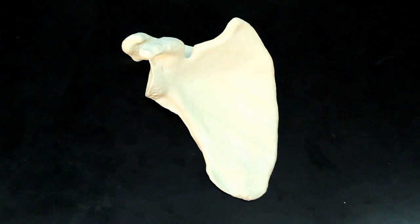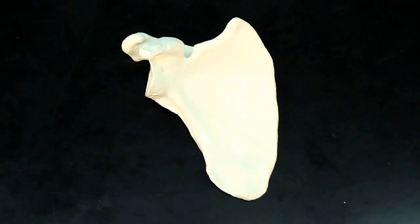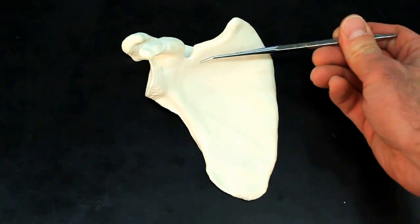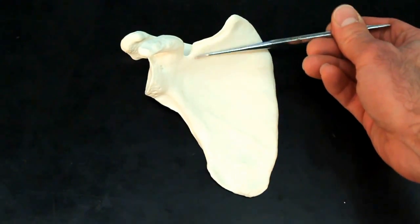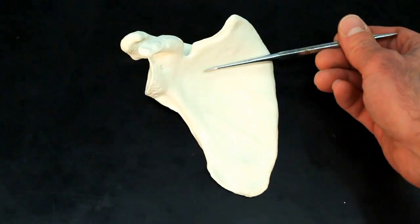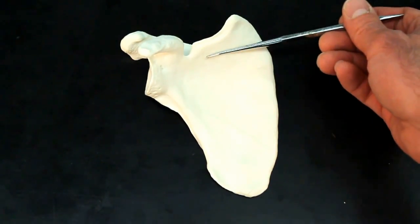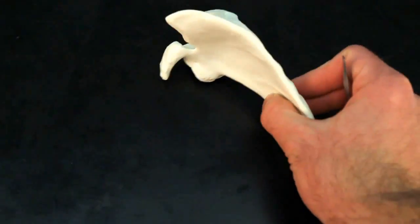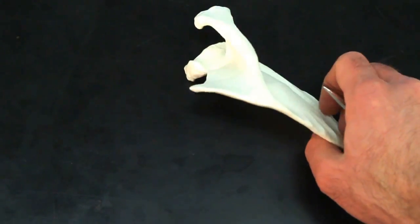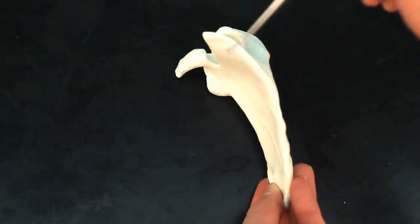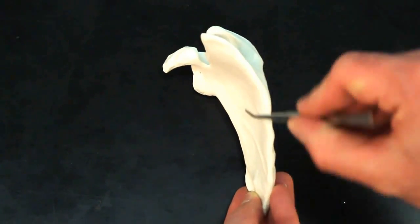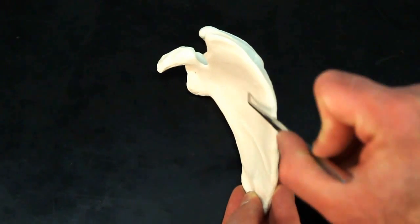Now, if we think about the term subscapular fossa, well, sub means below, scapula, we're in the scapula, fossa, indent. This shallow indent, right here, is the subscapular fossa. If you kind of pick it up, you can see how the bone's actually curled. That little bit of an indent, right here, this is where the subscapular fossa is found.